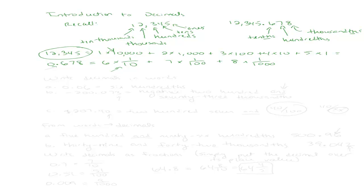Keeping that in mind, we can write decimals in words. So let's say I wanted to write the decimal 0.06 in words. I'm just going to look at what place value the last digit — the six — is in. It's in the hundredths place, so when I write it in words, it's just six hundredths.